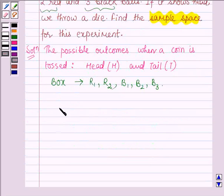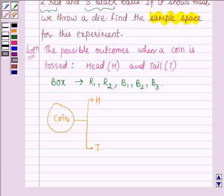Now, let us proceed further. A coin is tossed. Suppose this is a coin. So, the possible outcomes are either a head or a tail. Now, if it shows a tail, we draw a ball from a box which contains two red and three black balls.